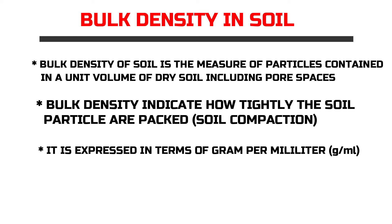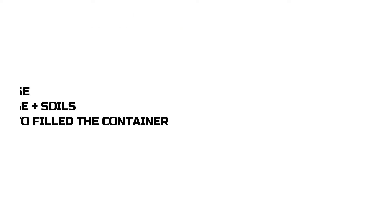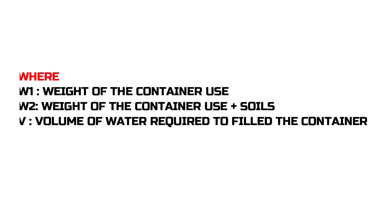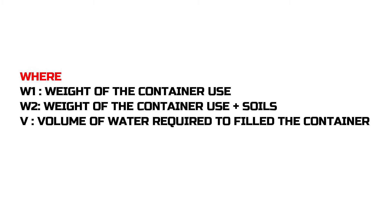And bulk density is expressed in terms of gram per milliliter. Bulk density is calculated by dividing the weight of the soil with volume of water as given in the formula displayed on screen: W2 minus W1 divided by V, where W2 is the weight of the soil in the container, W1 is the weight of the container, and V stands for the volume that fills the container.